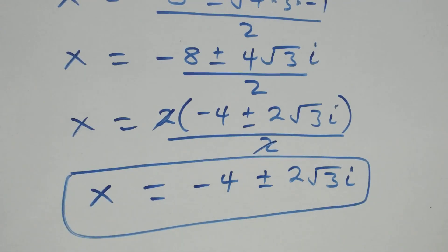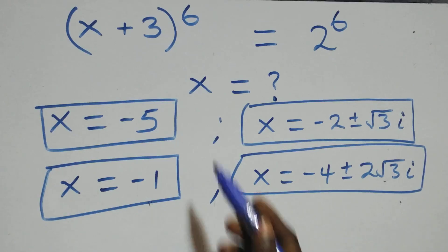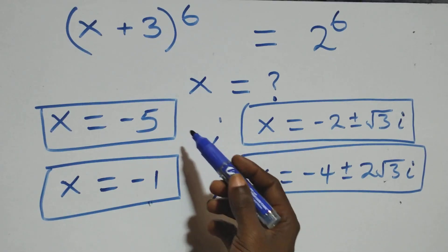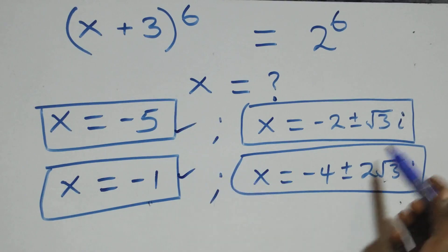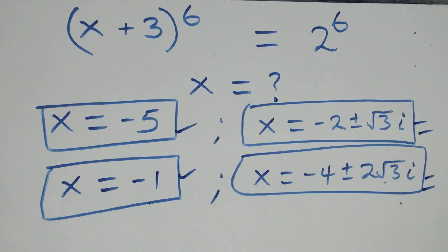And therefore, all together here we have six solutions in this problem: two real solutions, two complex solutions from the first case, and two complex solutions from the second case. Thank you for watching. Don't forget to subscribe for more videos. Share this video, give a thumbs up and put your comment. See you next class, bye for now.